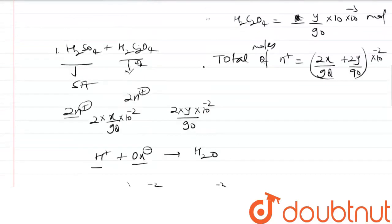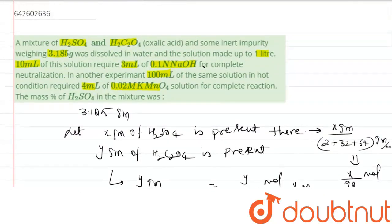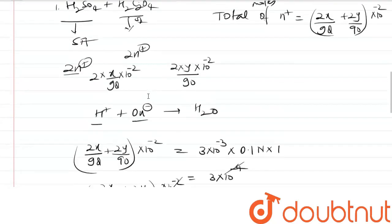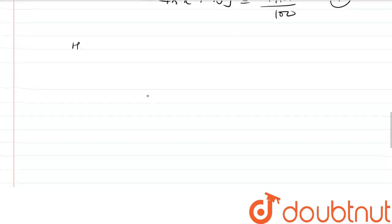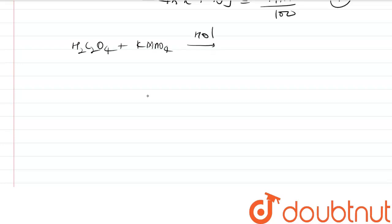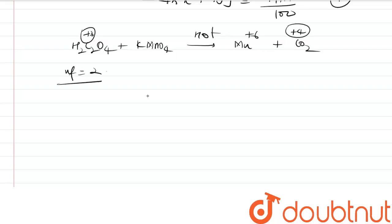Now, 4 ml of 0.02 M KMnO₄ is used in hot conditions. Only H₂C₂O₄ reacts with KMnO₄ in hot conditions, where it is converted to CO₂. The oxidation state change gives an N factor of 5 for KMnO₄ and an N factor of 2 for H₂C₂O₄.